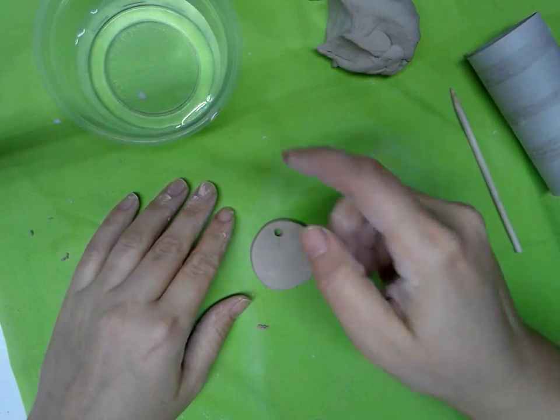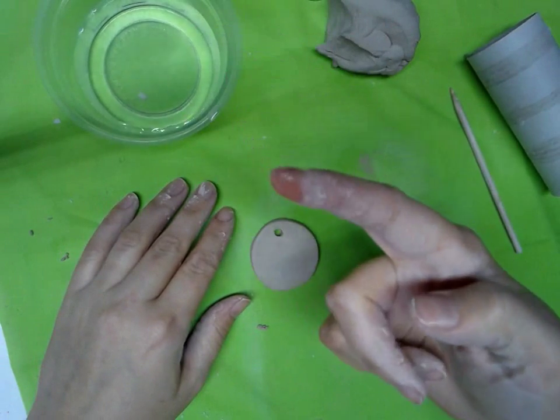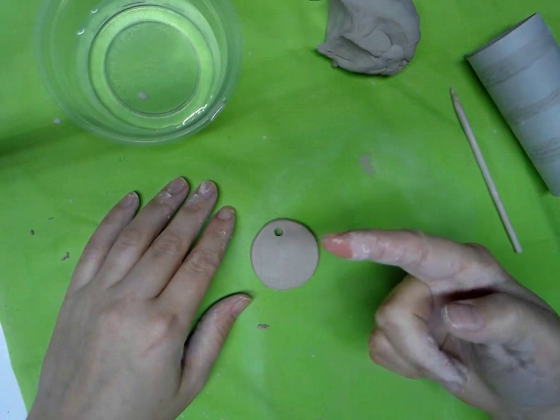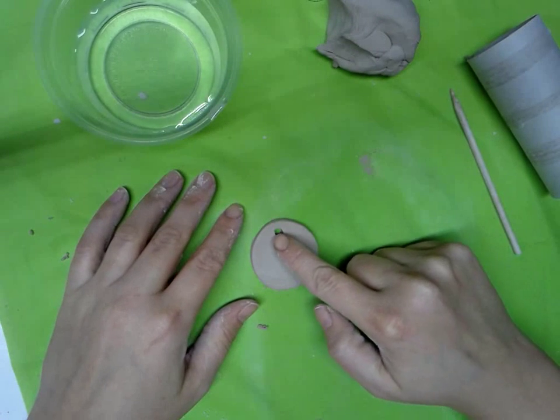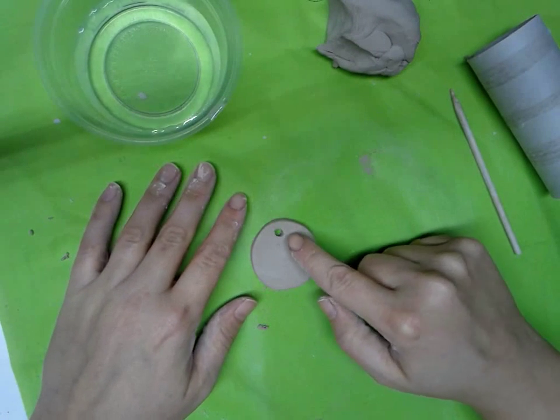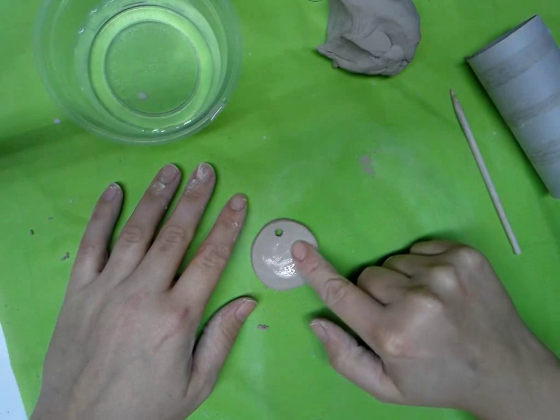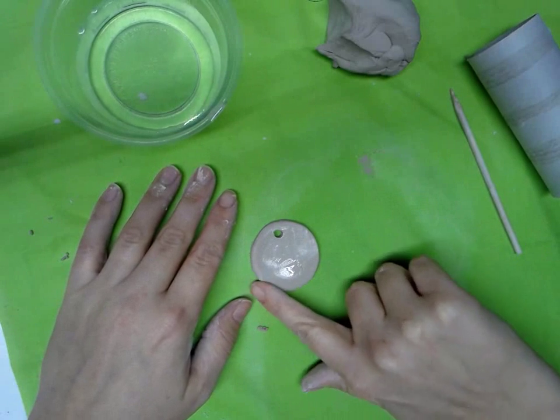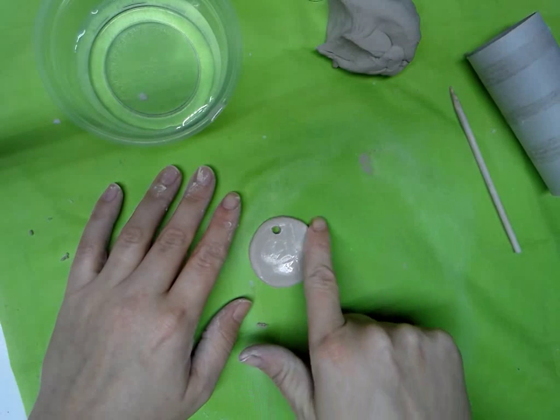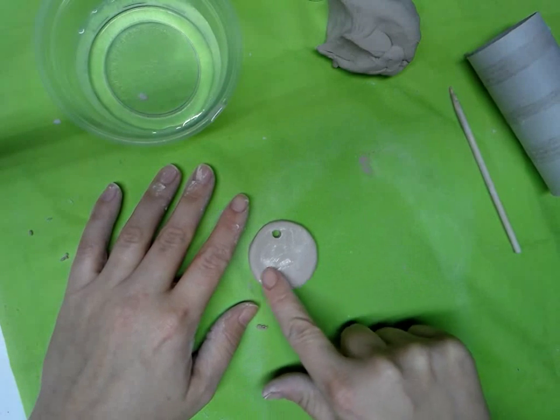Now I have my pendant and I'm ready to start my design. I'm going to take a little bit of water on my finger again, not too much because we don't want to get the clay all wet. It will get soggy and be hard to manage. I'm going to smooth it out, smooth out the edges and any lines or cracks that I have.